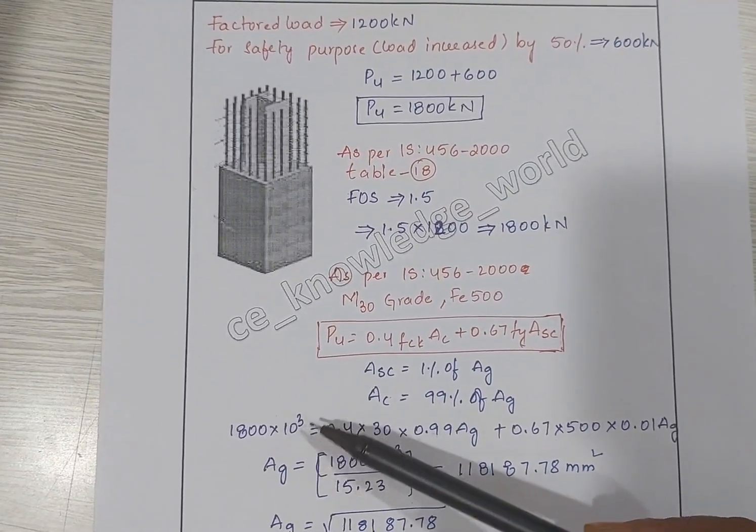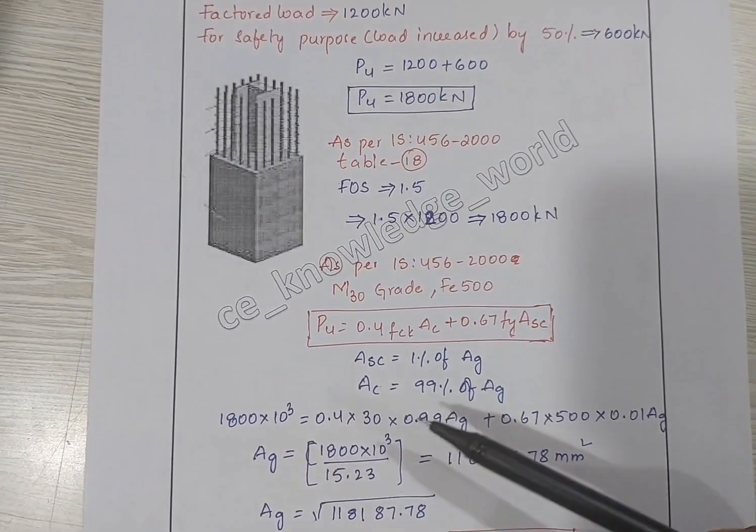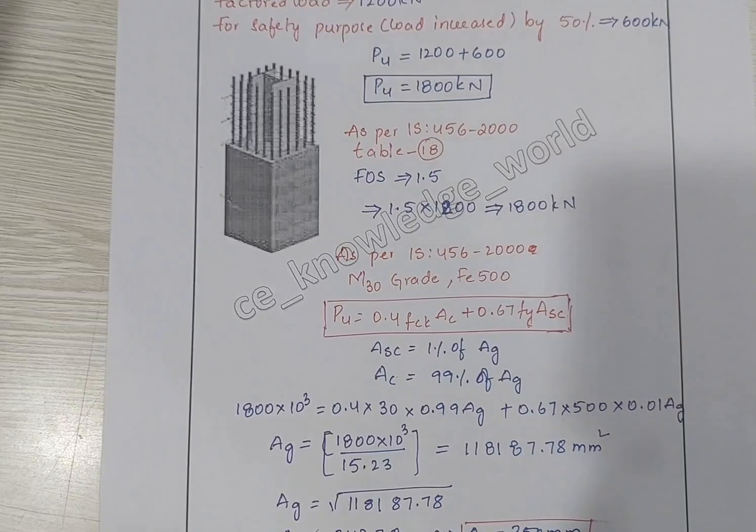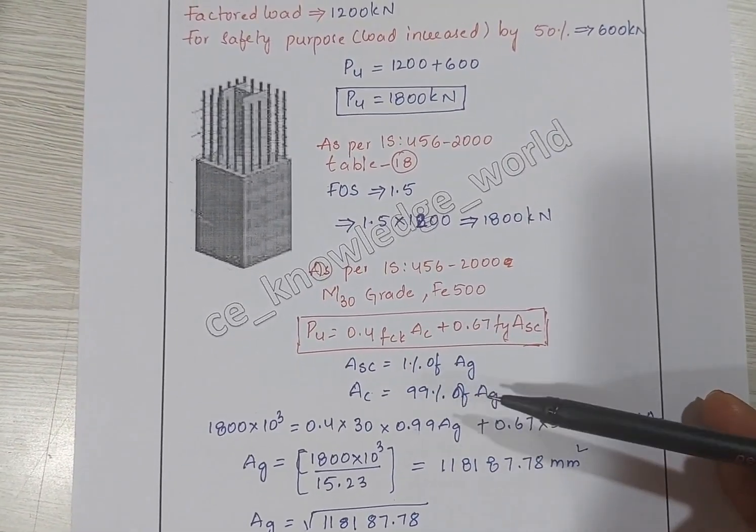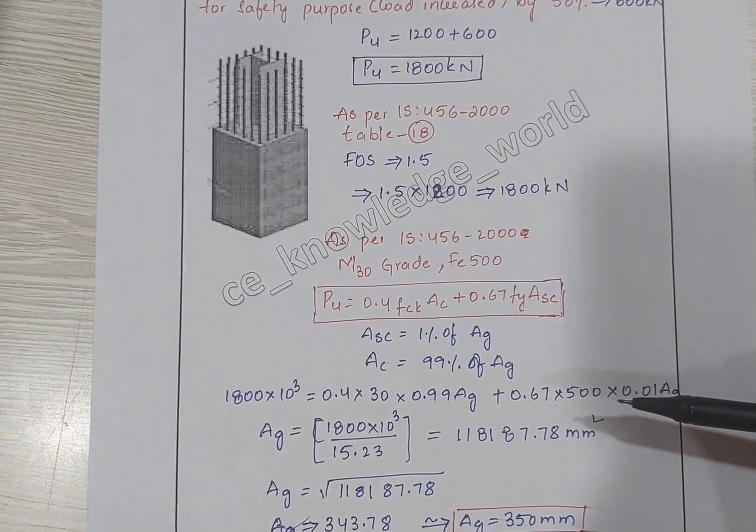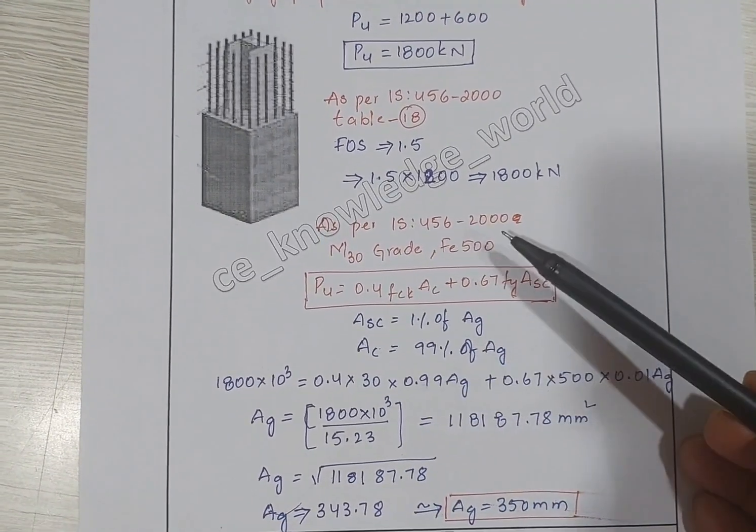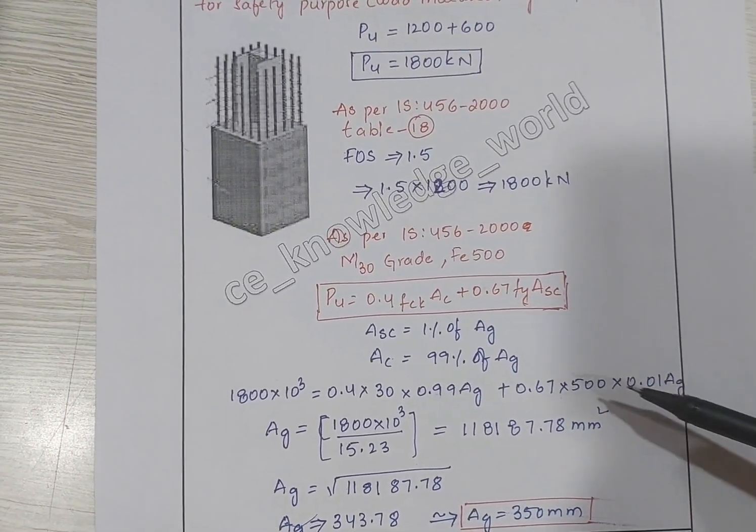So 1800 times 10 cubed equals 0.4 into fck, which is M30, into 0.99 Ag plus 0.67 into 500 times 0.01 Ag.